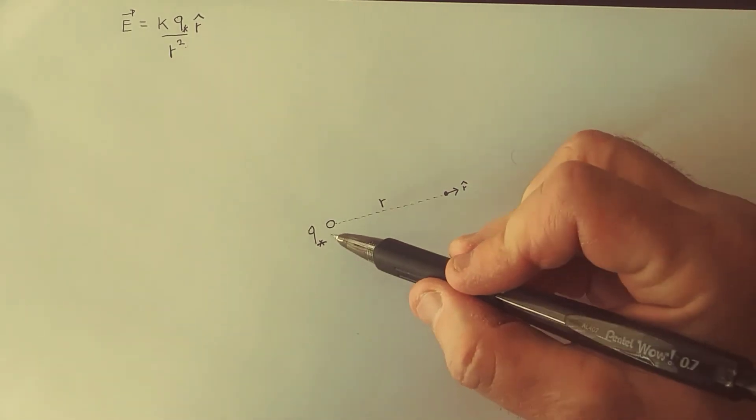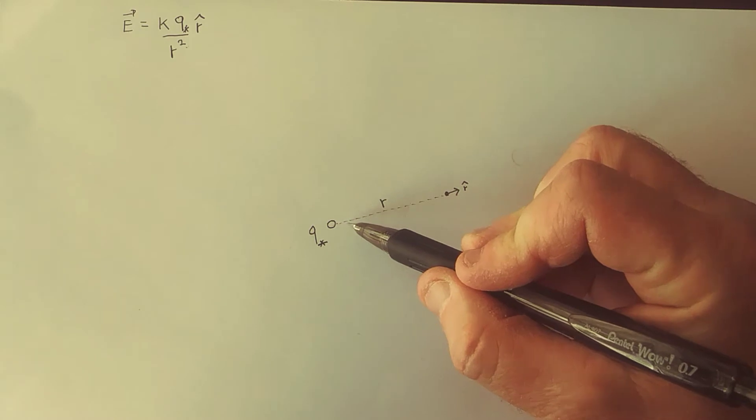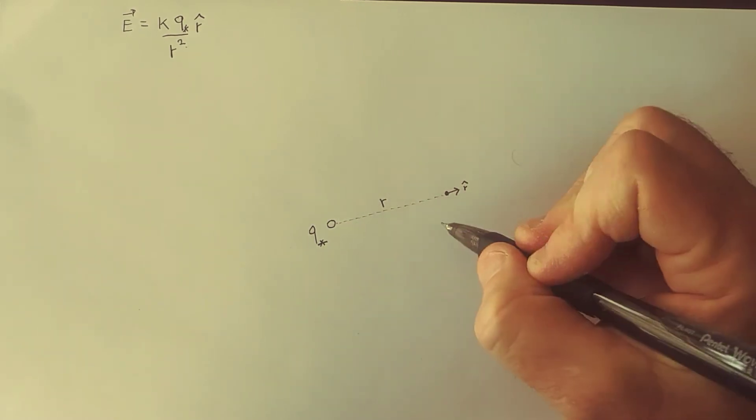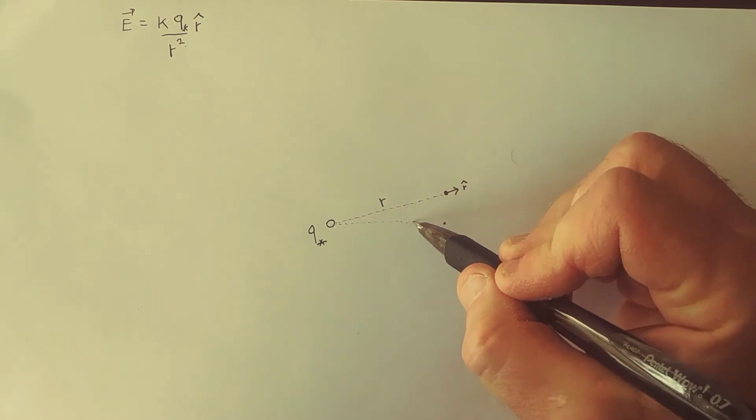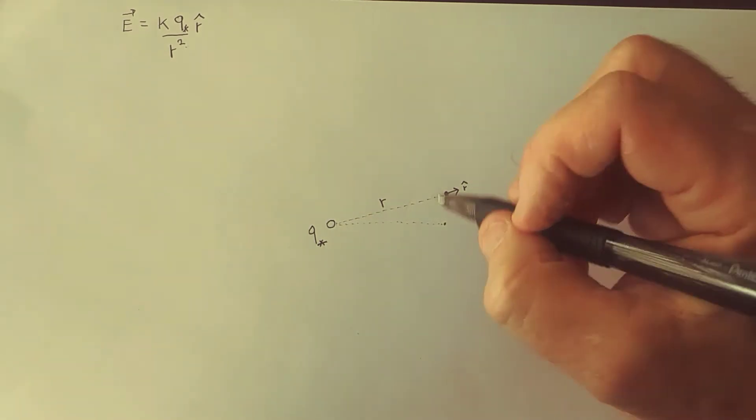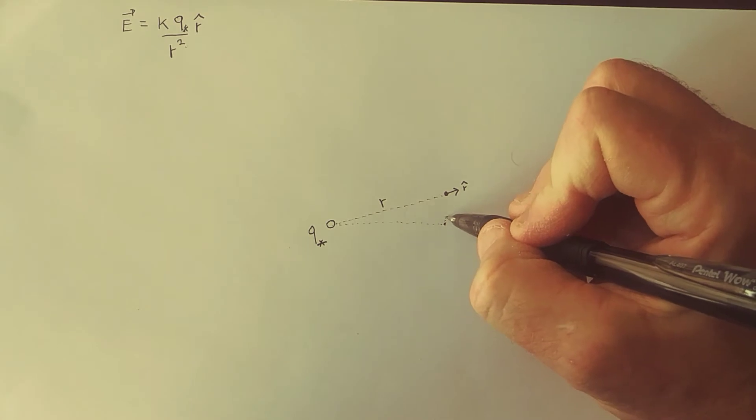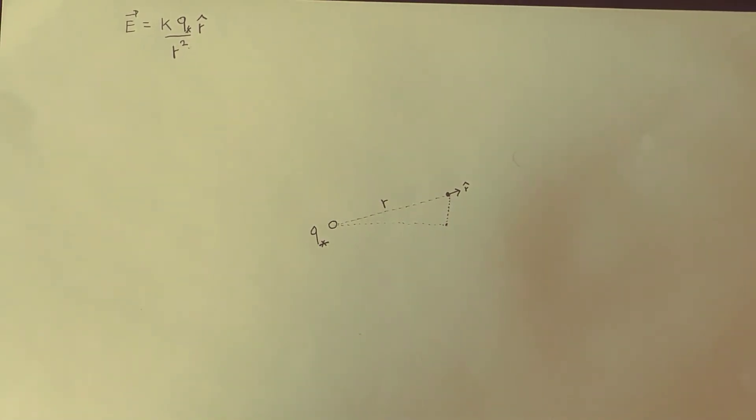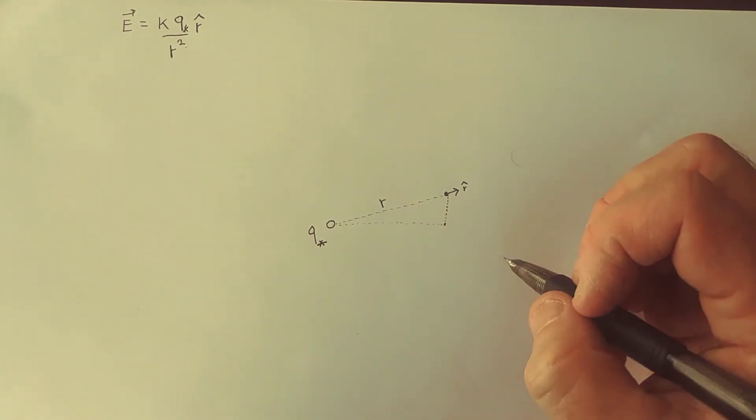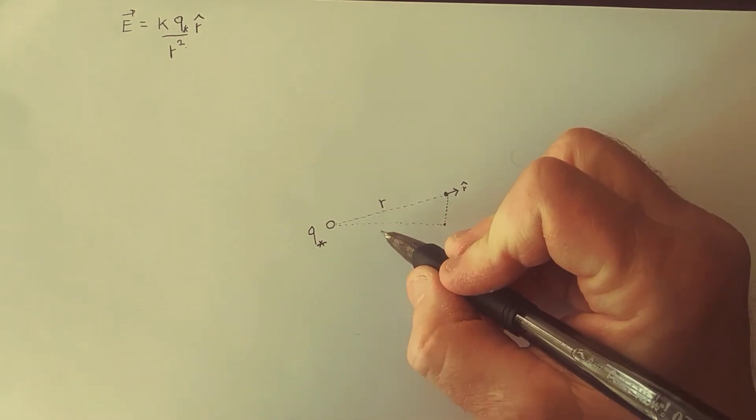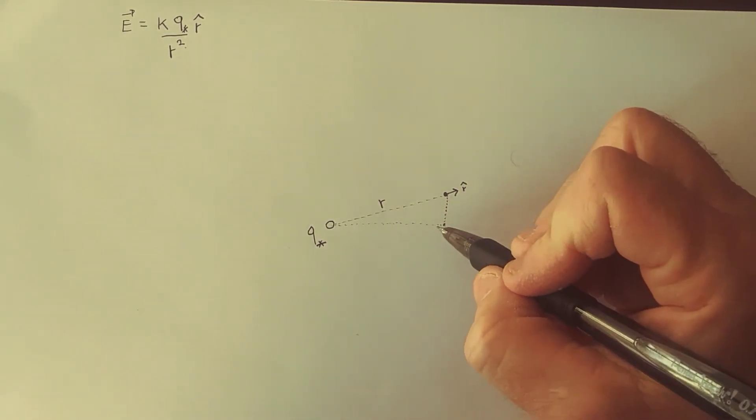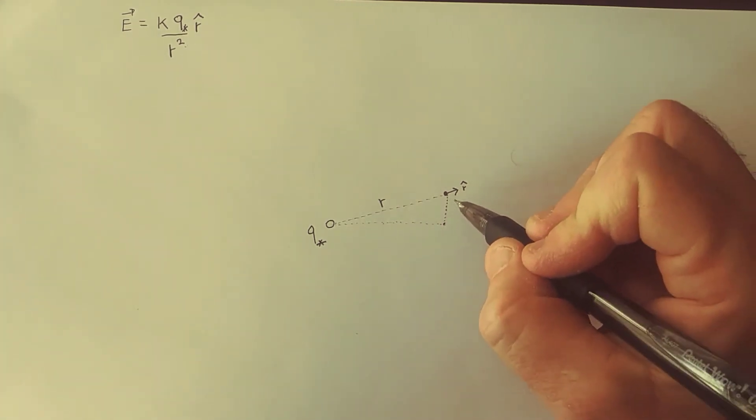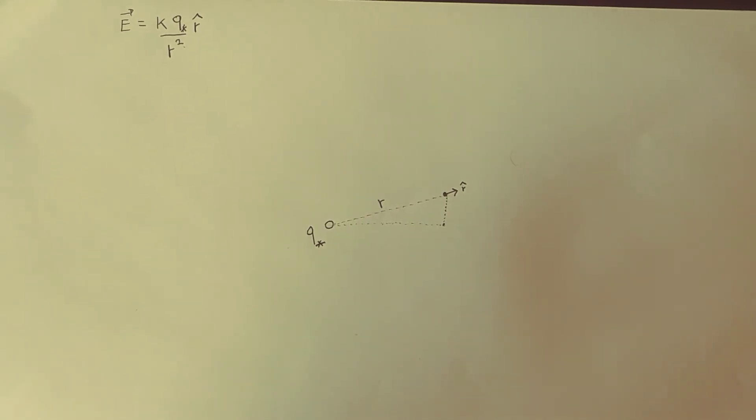But that's determined by how much this particle is shifted in the horizontal direction, which is this, and how much it shifted in the vertical direction, which is that. So this side and this side determine the length of this unit vector.